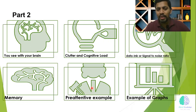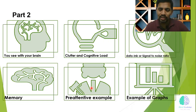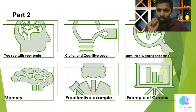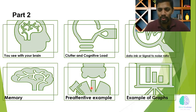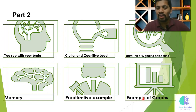We'll cover pre-attentive attributes: if you want only certain words, elements, or data to be in focus, how you can highlight those things both in chart format and text format. We also have a few examples of graphs and charts.